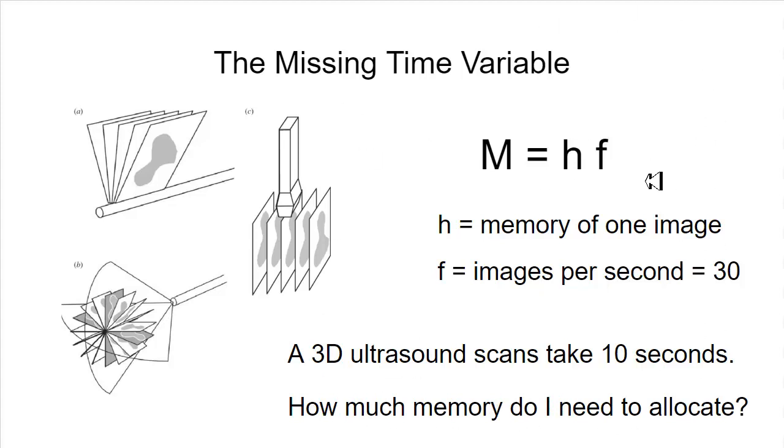When you look at this equation here, hopefully you can see that I have a placeholder for the memory for one image. I have a variable for the memory for one image. I have a variable for the images per second, the frequency of the images coming in. But I don't have a variable for this 10 second measure time.